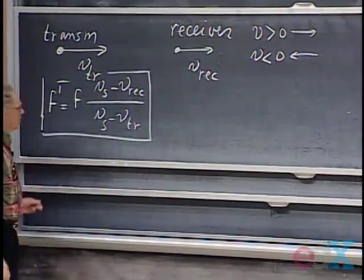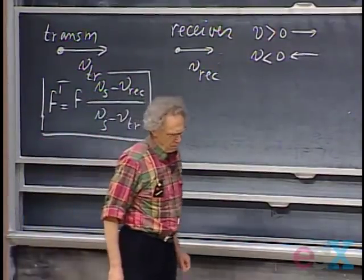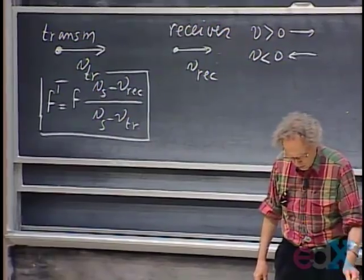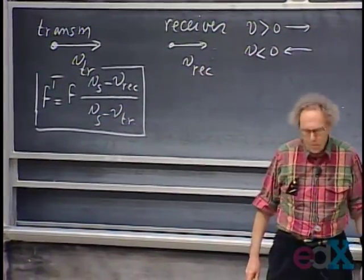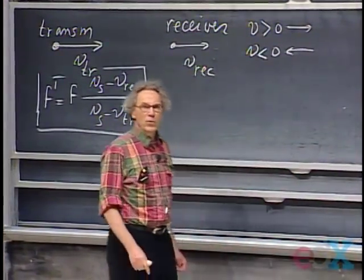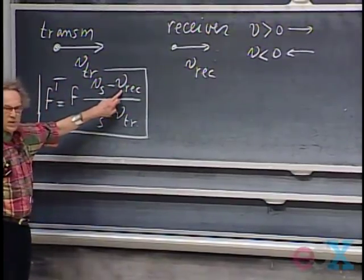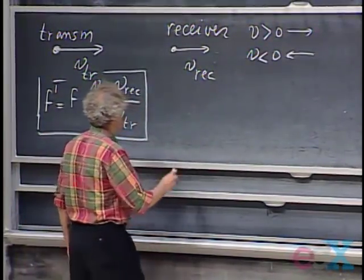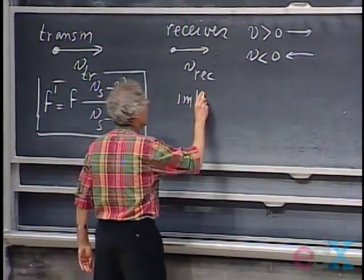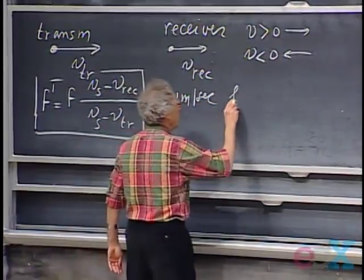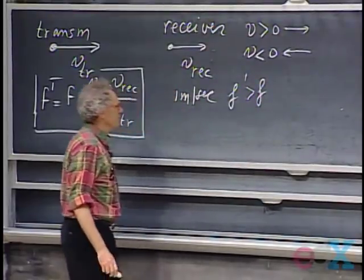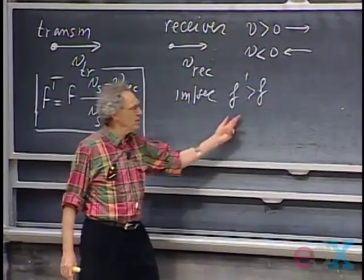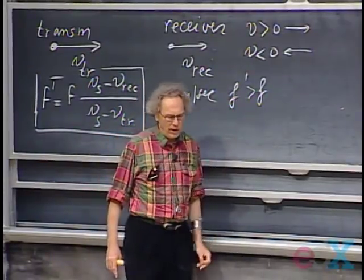This is known as the Doppler shift equation. If you have volume one of John Coley, you can look it up there as well. Suppose you are not moving at all — V receiver is zero — but I move towards you with one meter per second. If I move towards you, then F prime will be larger than F. If I move away from you with one meter per second, then F prime will be smaller than F.